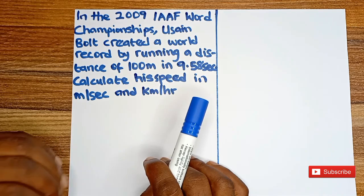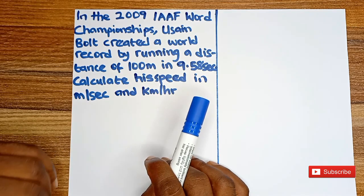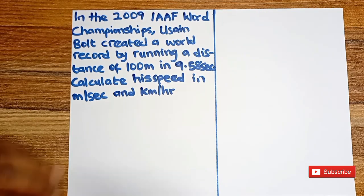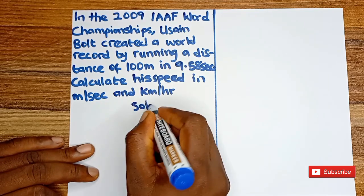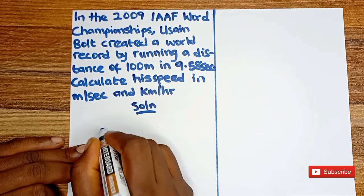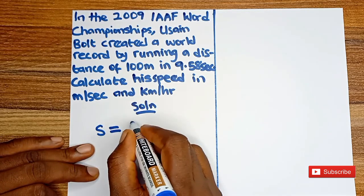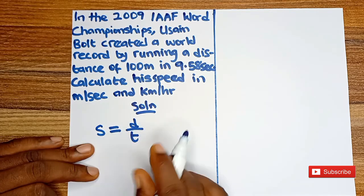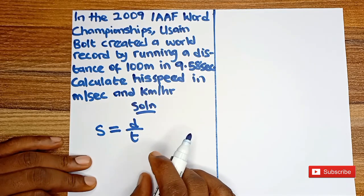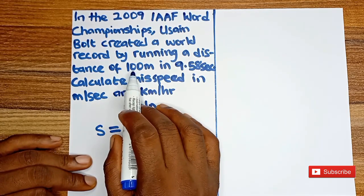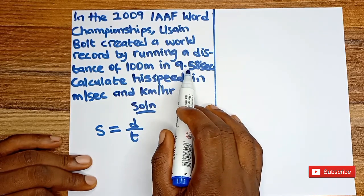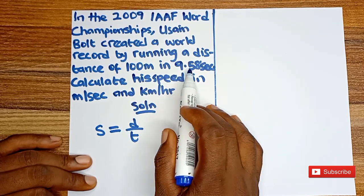So for us to do this we need to know the formula for speed. Speed is equal to distance covered all over time taken. And we are told from the question that he ran a distance of 100 meters within a time period of 9.58 seconds.